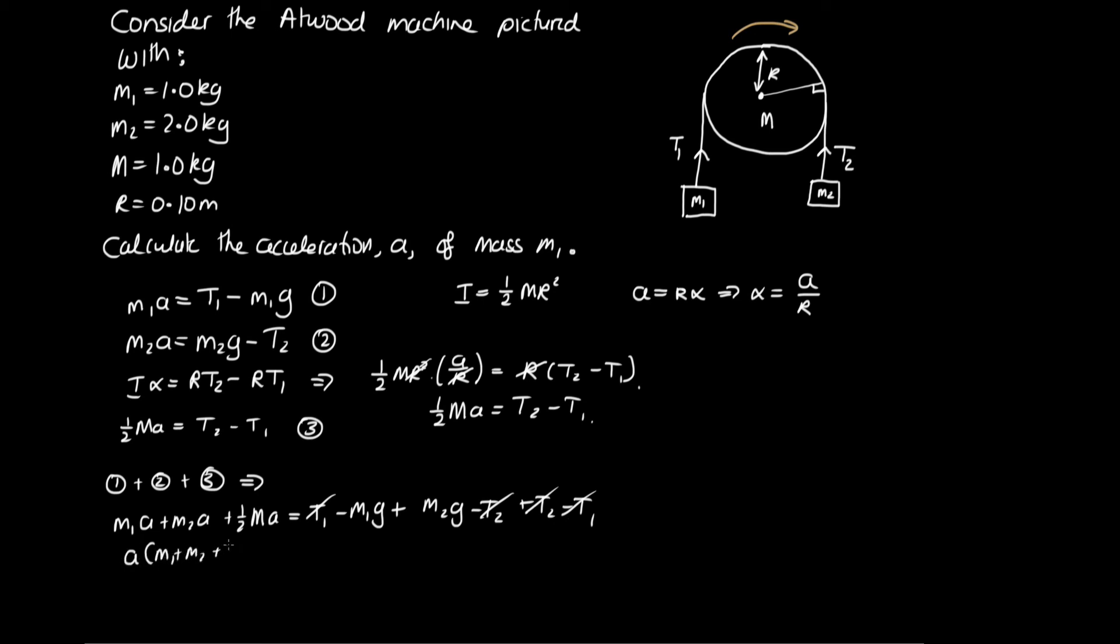a times (m₁ + m₂ + ½M) is equal to m₂g - m₁g. And then we can rearrange it to get our acceleration. Acceleration is equal to (m₂ - m₁)—let's pull g out as a common factor—over (m₁ + m₂ + ½M). And now these are all things that we have, so we can substitute in for our system here and solve this. So we've got (2 kg - 1 kg) times g, which is 9.8, divided by (1 + 2 + ½ times 1). And then we can solve this on the calculator and we get 2.8 meters per second per second. So this is the acceleration of mass m₁. And so we can say m₁ has an acceleration of 2.8 meters per second per second upwards.